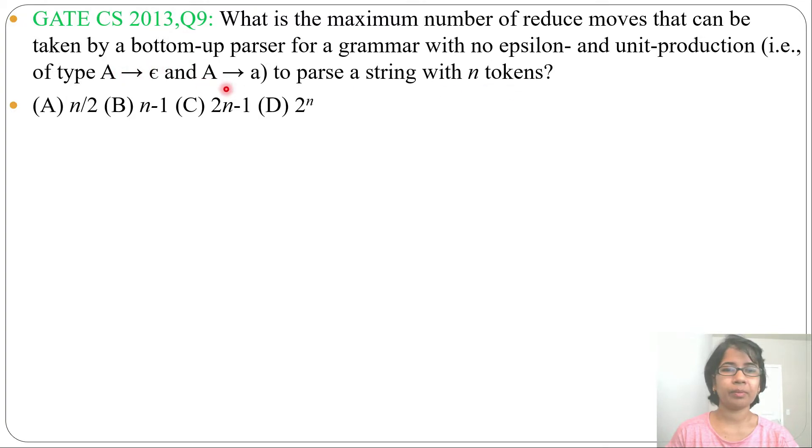Here epsilon production and unit production examples are given. If A derives epsilon, that is epsilon production. If A derives a, that is a unit production. Four options are given: option A is n/2, option B is n-1, option C is 2n-1, option D is 2^n.